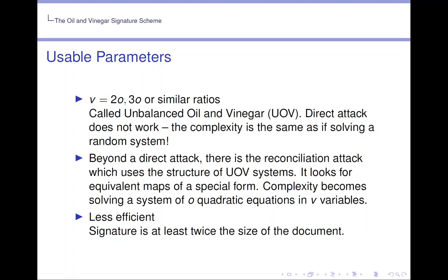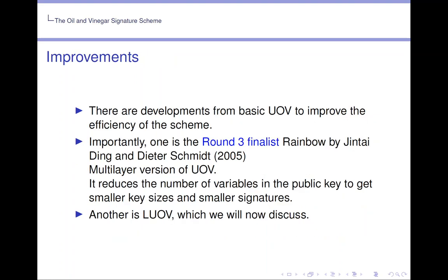Now choosing v equals 2o or something similar is less efficient. The signature is at least twice the size of a document. Therefore, there are many developments from basic UOV to improve the efficiency of the scheme.